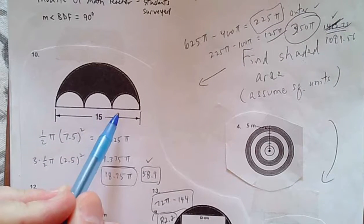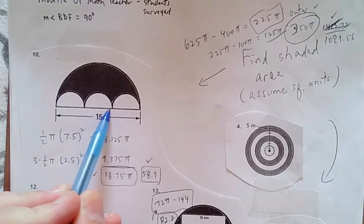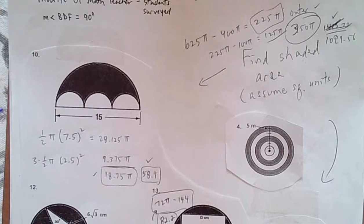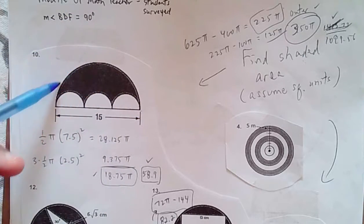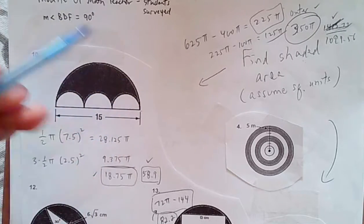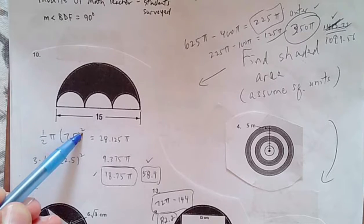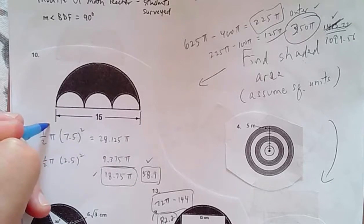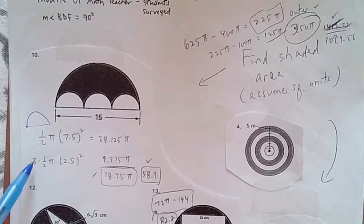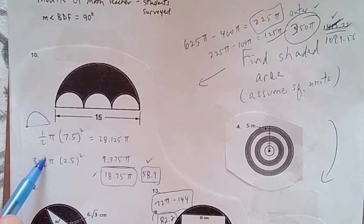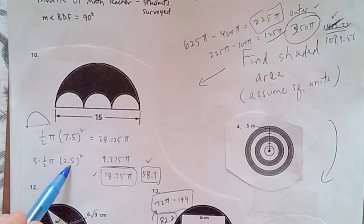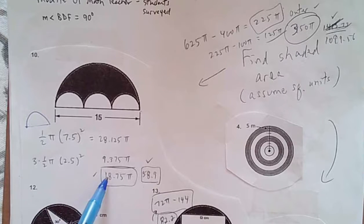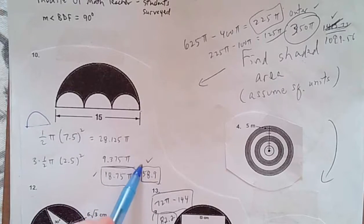I know that the diameter of each of these smaller circles is 5, so the radius is 2.5. The area of the semicircle, if it's entirely given, is going to be one-half π times 7.5 squared. So that's the area of the whole thing, like this shape. Now there's three smaller circles, each with an area of one-half π times 2.5 squared. And then you subtract. And that's where I get 18.75π with a decimal equivalent of 58.9.